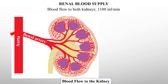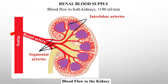The renal artery divides to form the segmental arteries. Segmental arteries further branch and pass between the renal pyramids. These branches are called the interlobar arteries. Interlobar arteries divide to form the arcuate arteries, which run parallel to the surface between the cortex and medulla.